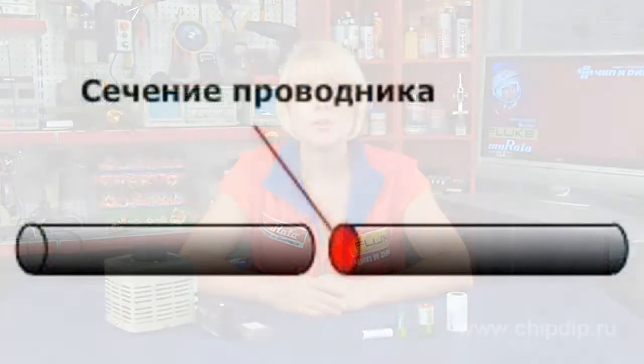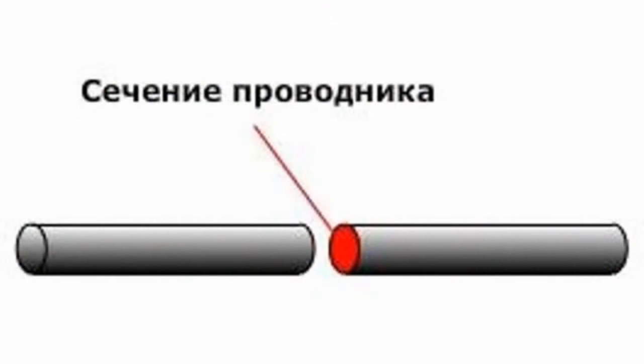Ampere hour is a notion related to electric accumulator service. It is a special unit of electric charge. One ampere hour is a charge transmitted via a conductor cross-section per one hour with one ampere current.